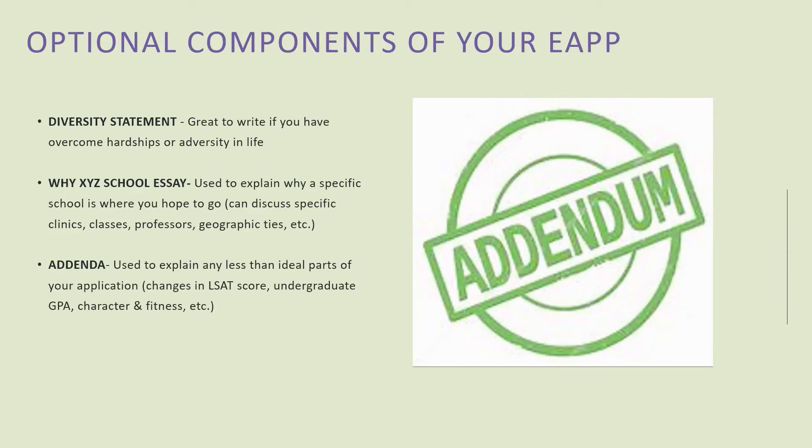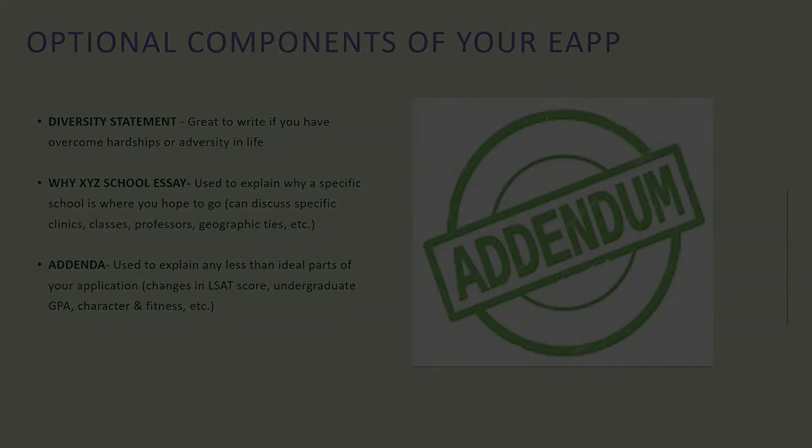Make sure that you read the character and fitness questions for each school carefully, because you don't want to over-disclose. Pay attention to what sort of information a school is asking you for and provide only that. The caveat is: if you're genuinely confused about whether a school would want you to disclose something, definitely err on the side of disclosure.